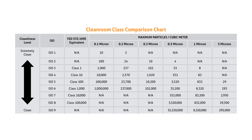Clean room cleanliness is defined using multiple different classes, each using particle size and counts to set them. These classes are referred to as the ISO classification standards, which are broken up into nine different classes: ISO 1, ISO 2, ISO 3, ISO 4, ISO 5, ISO 6, ISO 7, ISO 8, and ISO 9. Clean room cleanliness is also defined by another classification system established before the introduction of ISO, popularly known as the US Federal Standard 209E. This system also uses particle size counts to set each class, broken up into six different classes: class 1, class 10, class 100, class 1,000, class 10,000, and class 100,000. This system correlates with the ISO classification system as indicated in the following table.